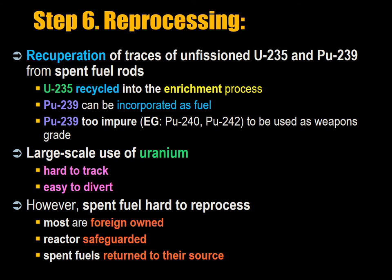Step 6 is reprocessing — using chemical separation. Reprocessing permits the recuperation of traces of unfissioned uranium-235 and plutonium-239 from spent fuel rods. Uranium-235 can be recycled into the enrichment process, whereas plutonium-239 can be incorporated as fuel. Usually it will be too impure because of plutonium-240 and plutonium-242 to be used as weapons-grade fuel. Large-scale use of uranium is very hard to track and therefore easy to divert for weaponization. Japan has sufficient nuclear material for between 1,000 and 2,000 nuclear weapons, with a program that could probably weaponize in a few months and a rocket program shifting to solid fuel.